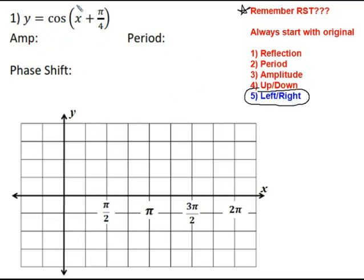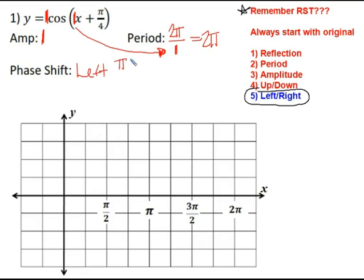For example 1: our amplitude is 1. For the period, we take 2π divided by the b value of 1, so our period is 2π. We do have a phase shift — we're adding π/4 on the inside — which means we move our graph left π/4. Starting with the original cosine: it starts with a max, then at π/2 we get an x-intercept, at π we get a min, another x-intercept, and then back to a max.